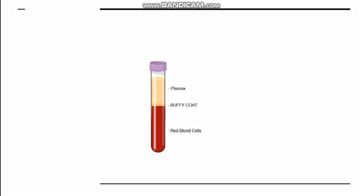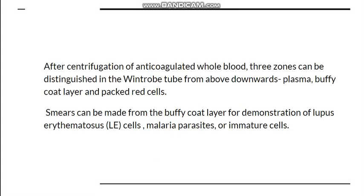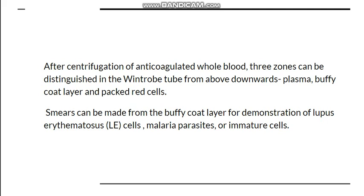When we centrifuge anticoagulated whole blood in the Wintrobe's tube, three zones are visible: plasma on top, then a buffy coat layer, then packed red cells at the bottom — the PCV is measured from the packed red cells. The buffy coat contains mostly WBCs and platelets. The buffy coat layer is especially important for detecting rare elements such as LE cells, malaria parasites when present in very small numbers, and immature cells.